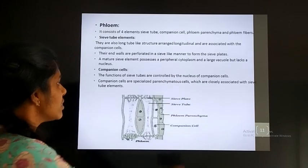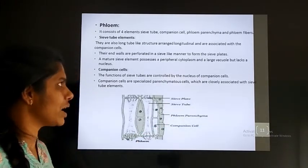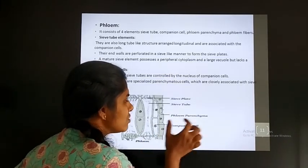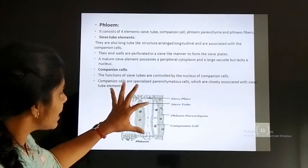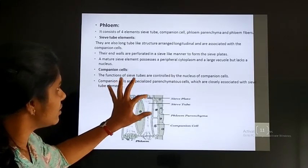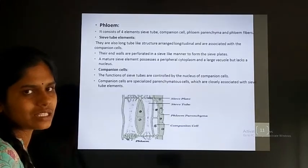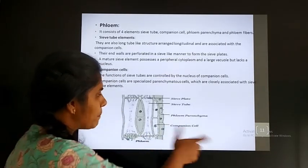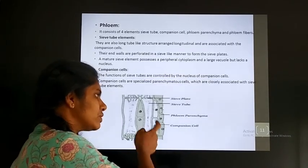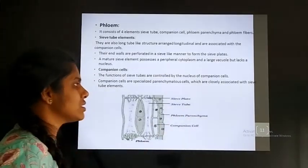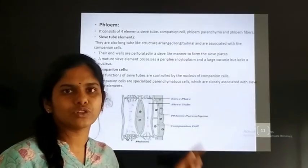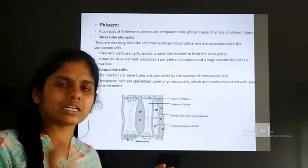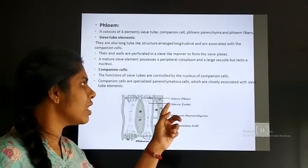The sieve tube is a tube-like structure with a longitudinal arrangement, associated with another cell — the companion cell. At the end of the sieve tube, they are populated with sieve-like plates called sieve plates. In a sieve tube, there is absence of nucleus.